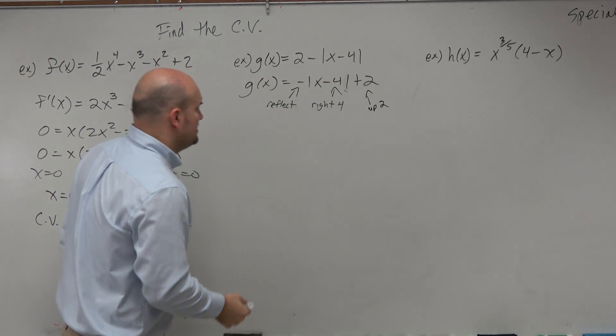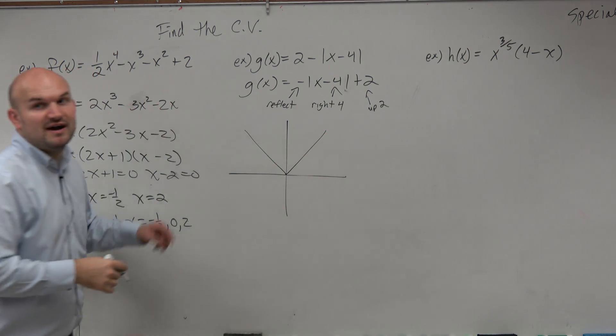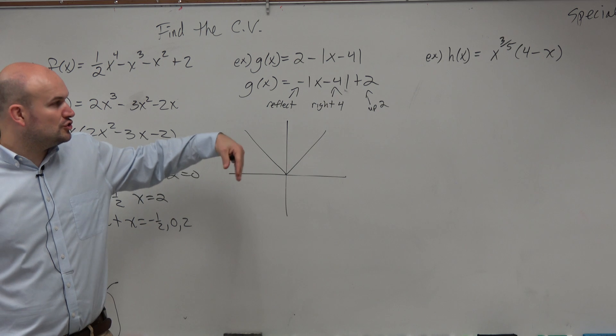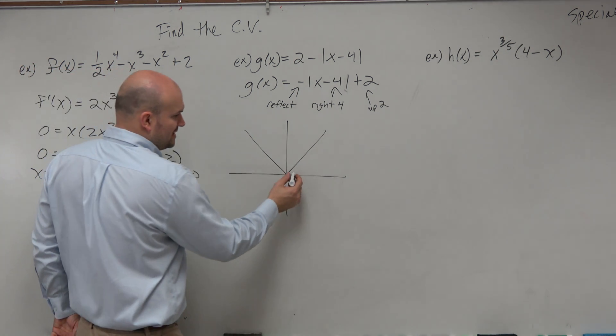So what does this graph look like? Well, the parent graph looks like this. If I reflect it about the x-axis, shift it 4 units to the right, and then up 2, it should look something like this.